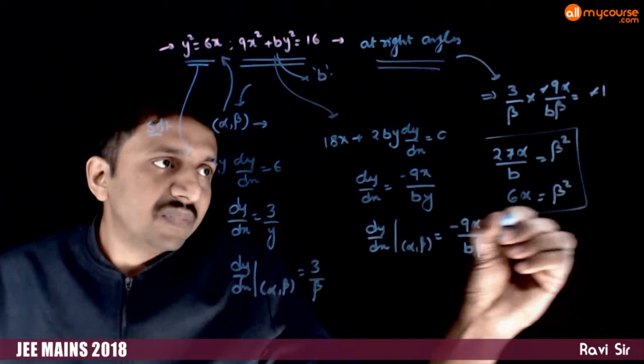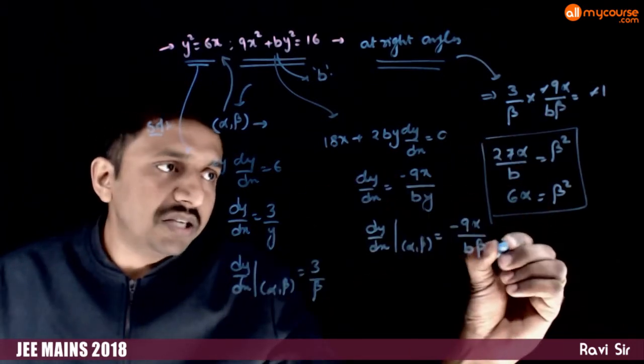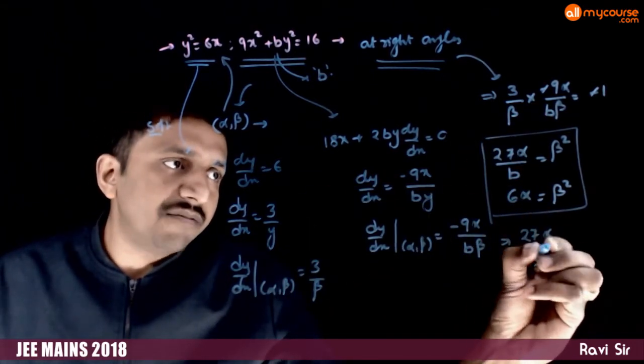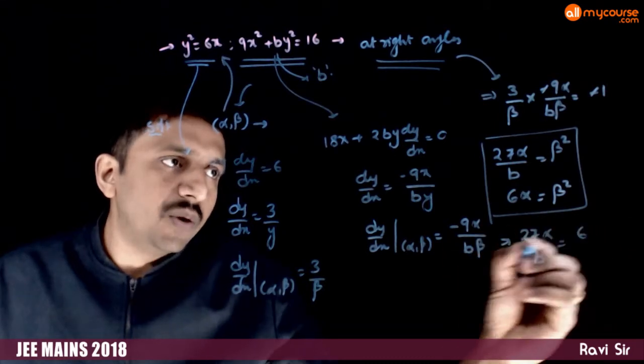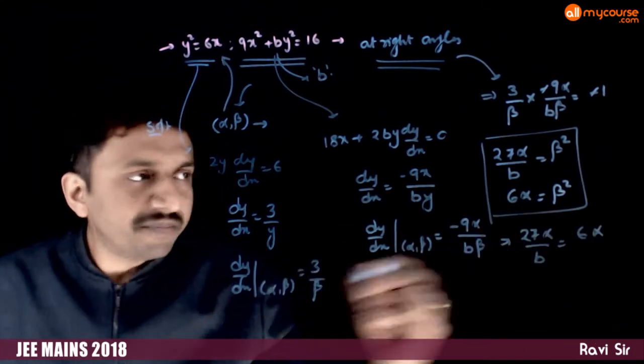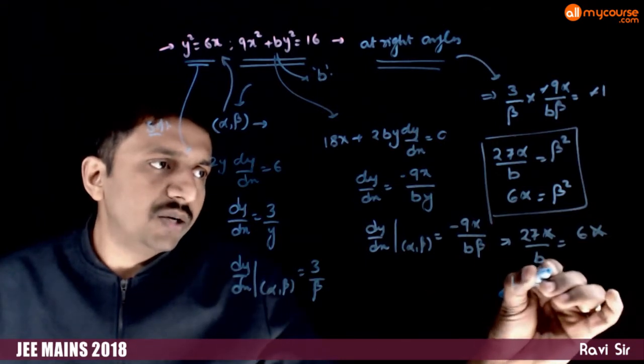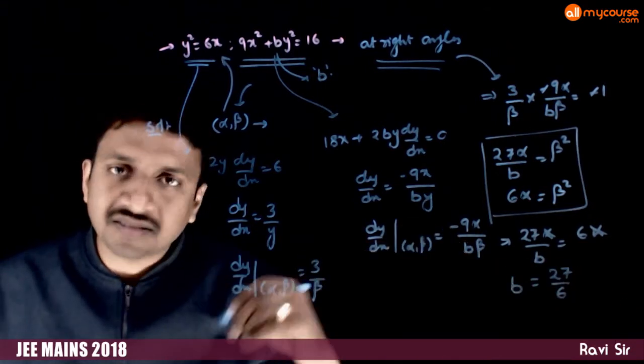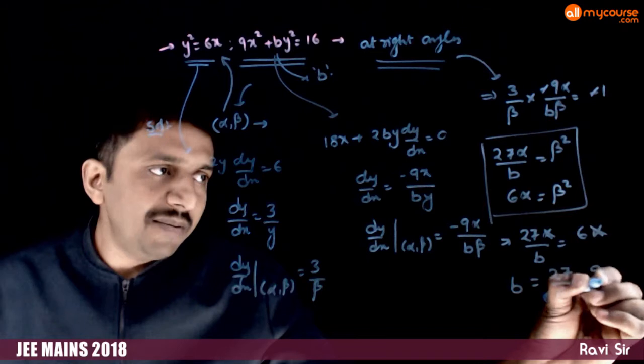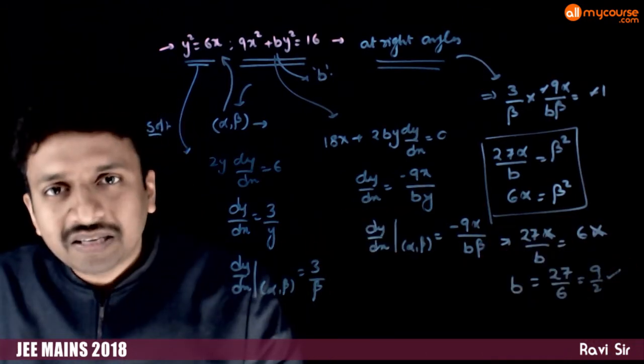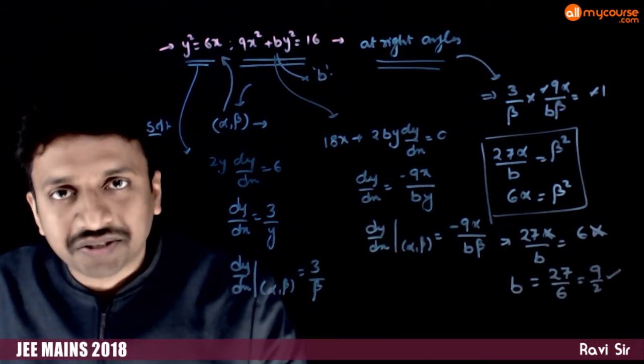If you solve these two equations, you get 27 alpha by b is equal to 6 alpha. Alpha and alpha gets cancelled. So b is equal to 27 by 6 or 9 by 2. 9 by 2 is the answer to this question.